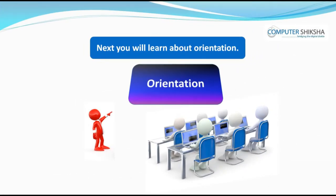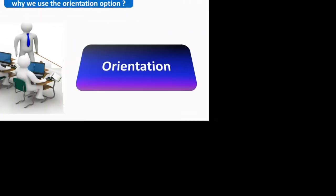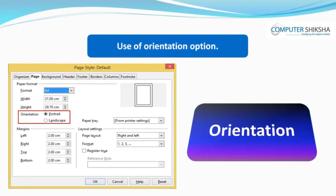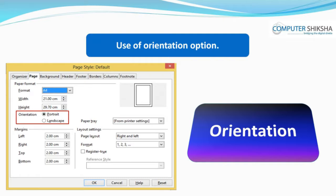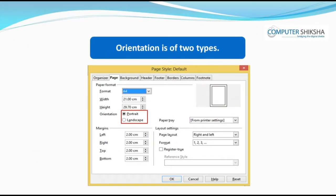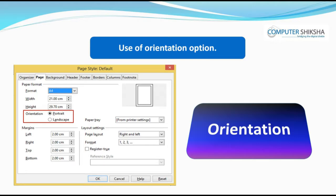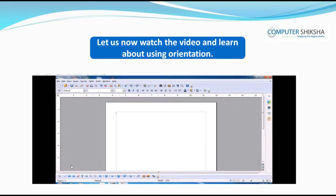Next, you will learn about orientation. Can you tell why we use the orientation option? With the help of orientation, you can change the property of your page — that is, you can change its height or width. Orientation is of two types: Portrait and Landscape. Currently, the page you are working upon is in portrait orientation. You can see that the height of your page is more than the width. If we change this to landscape orientation, you will note that the width becomes more than the height of the page. Let us now watch the video and learn about using orientation.